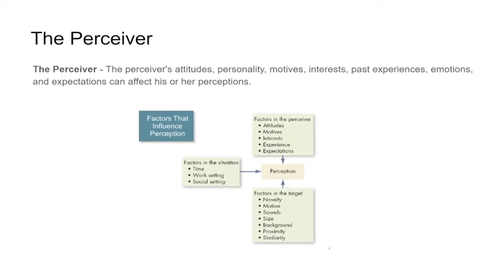Within each component: the situation involves time, work setting, and social setting. The perceiver is influenced by attitudes, motivation, interests, experience, and expectations. The target's perceptibility depends on novelty, motion, sounds, size, background contrast, proximity, and similarity. These all influence perception.